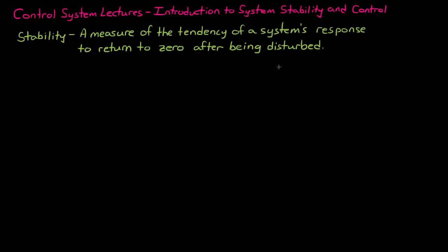If a system is exposed to an impulse function, for example you hit it with a hammer, and the system response equals zero as time approaches infinity, then this is a system that is considered stable.